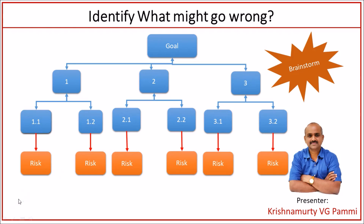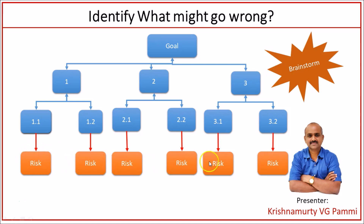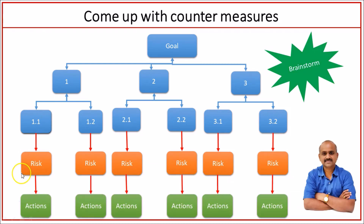Now let us review all the risks and eliminate any risks that are improbable or whose consequences would be insignificant. We will be eliminating improbable or insignificant risks from the fourth level, showing only the potential risks or problems at the fourth level.